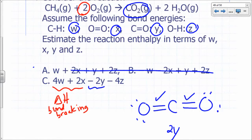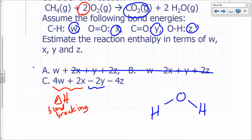And then how many O-H bonds are you going to form? What's the structure for water? H, O, H. How many O-H bonds? Four total. You've got two water molecules.